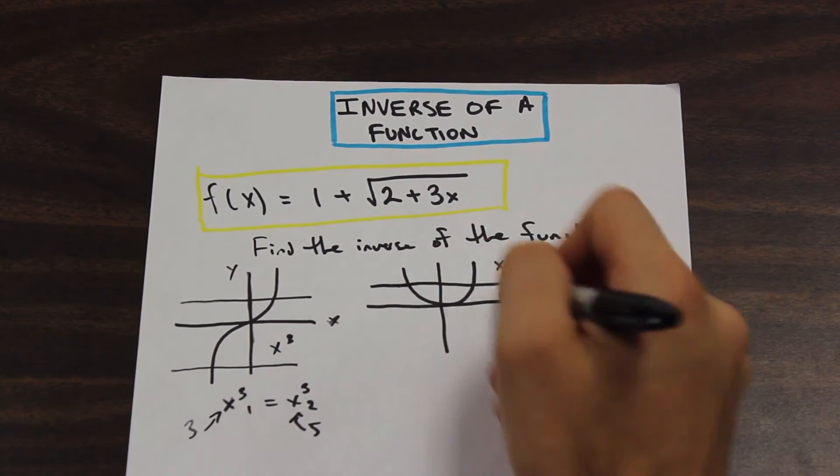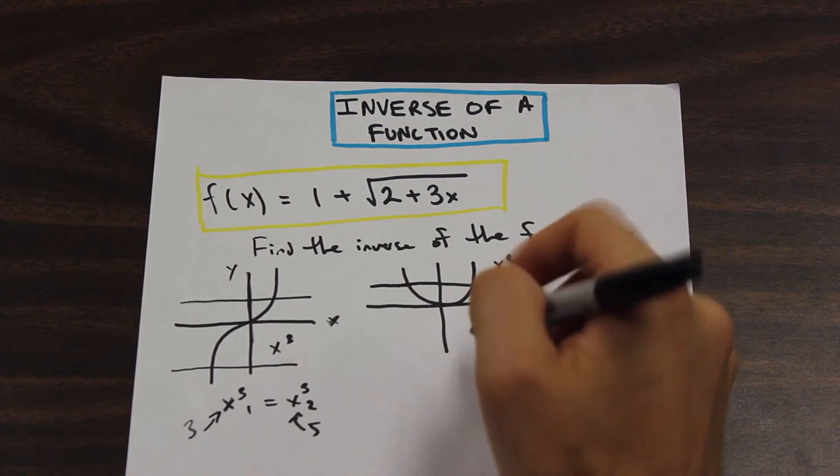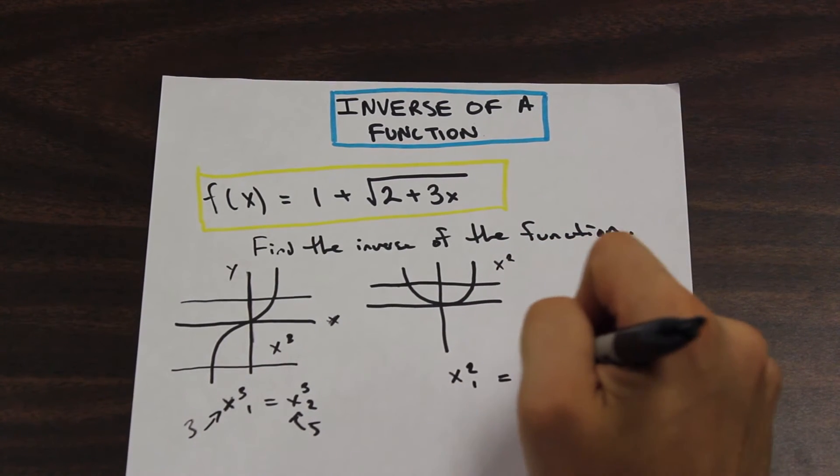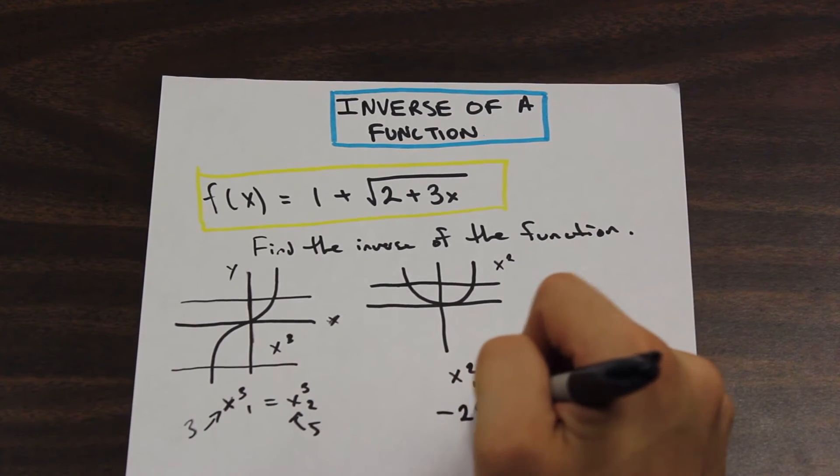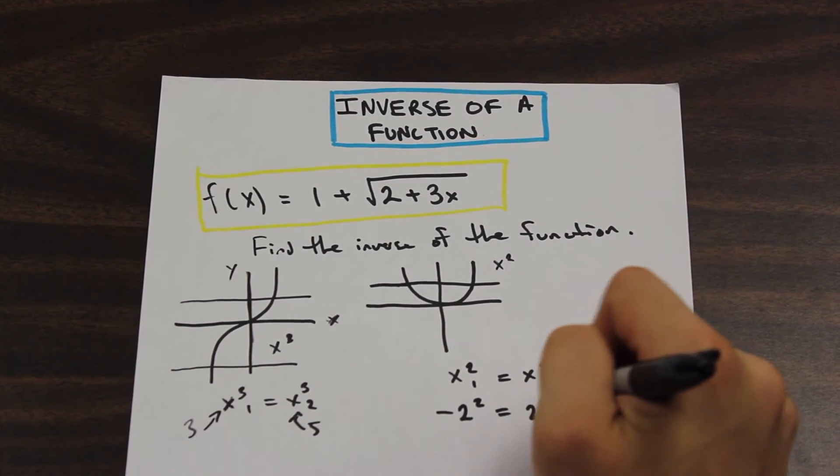However, for x squared, we can put in two different numbers and get the same result. So for example, if I were to use negative 2 squared, 2 squared.